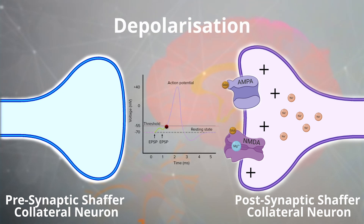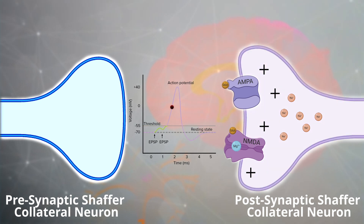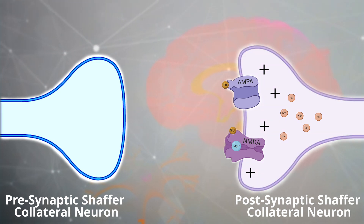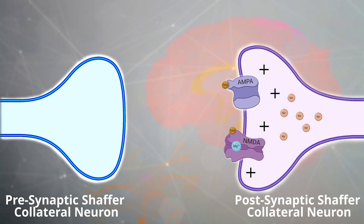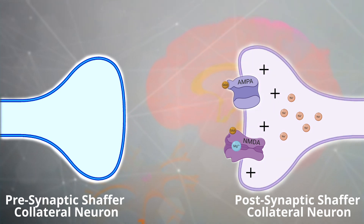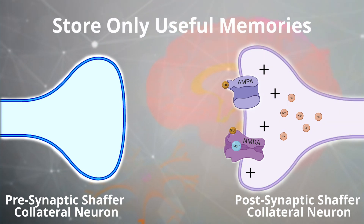Once the depolarization reaches the threshold value, an action potential occurs and propagates down the excitable membrane. However, during low frequency action potentials, AMPA receptors are not open long enough to result in LTP. This allows the brain to select and store only useful memories.